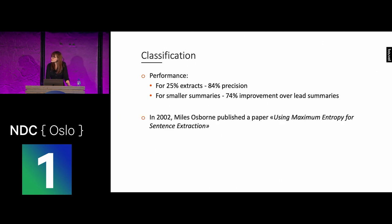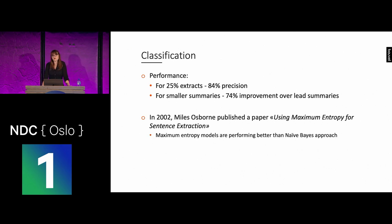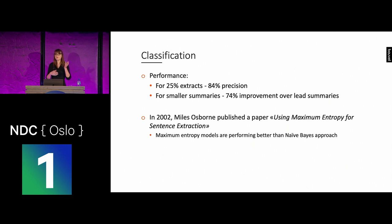In 2002, Miles Osborne published a paper showing that maximum entropy models could perform better than naive Bayes for classifying sentences, because he realized that the features are not really independent of one another. The position of a sentence, the number of stop words, and other features are most likely not independent, so other approaches perform better.